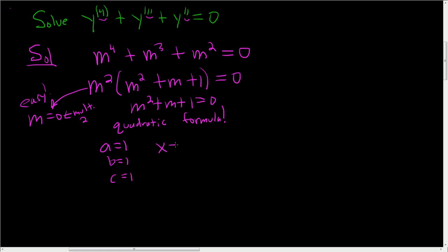So then x is negative b, so negative 1 plus or minus the square root: b squared, that's 1 minus 4ac, so minus 4, all over 2 times 1, so 2. So we end up with negative 1 half plus or minus i square root 3 over 2.